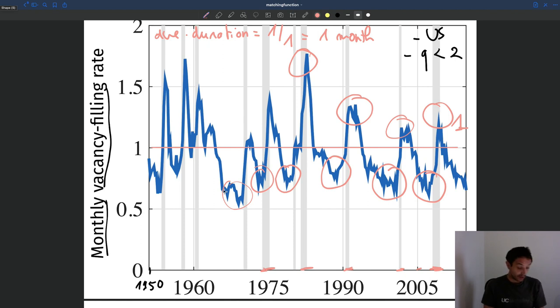Firms on the other hand, they take a long time to fill their vacancies in good times. And it's partly because a lot of vacancies are posted. And so there's a lot of competition for workers and firms are going to take a lot of time to fill their vacancies. In bad times, it's the opposite. In bad times, workers take a very long time to find jobs. The pool of unemployed workers grows.